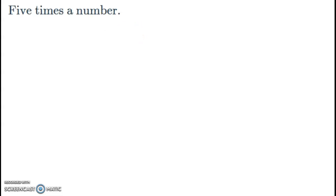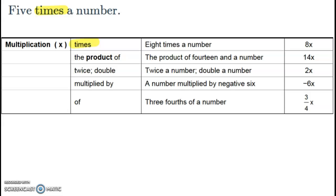If you have this little key, you could look under multiplication and see times, and know that you're multiplying. Here it has eight times a number, but in our example it's five times the number, so instead of 8x it'll be 5x.